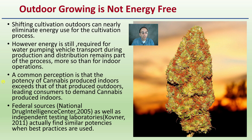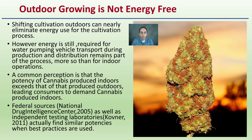A common perception is that the potency of cannabis produced indoors exceeds that of outdoor production, leading consumers to demand indoor cannabis. However, federal sources and independent testing labs actually find similar potencies when best practices are used. Indoor facilities can produce a better-looking flower, which is sometimes associated with purchase decisions. Potencies could be similar, and indoors usually produces a more consistent and better-perceived appearance. For extraction purposes, it would not matter whether cannabis is grown indoors or outdoors, and outdoors will have less overall energy input.